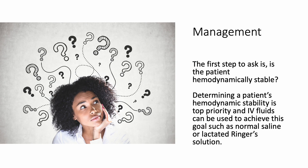As far as management, the first step to ask is: is the patient hemodynamically stable? Determining a patient's hemodynamic stability is top priority, and IV fluids can be used to achieve this goal, such as IV normal saline or lactated Ringer's solution.